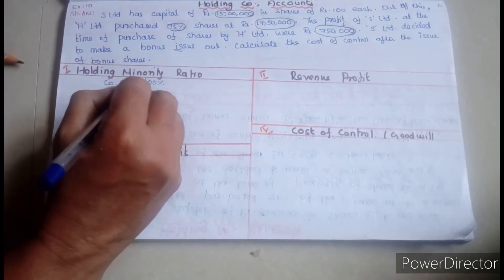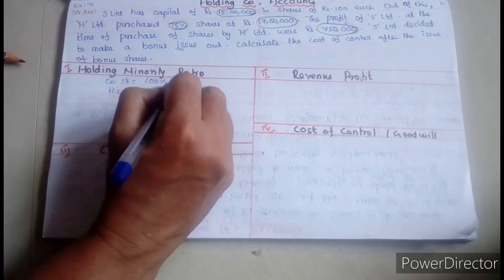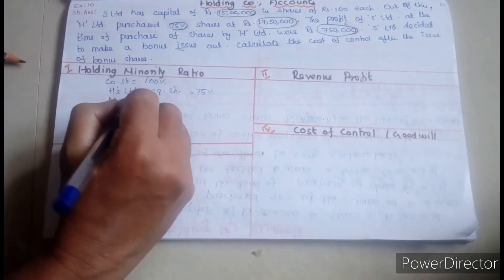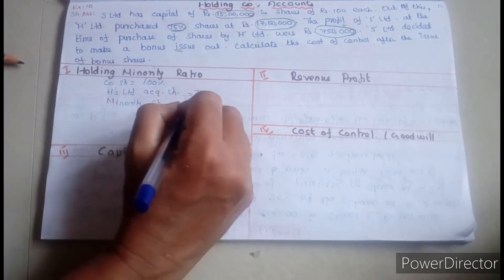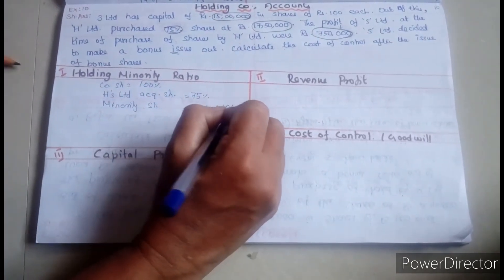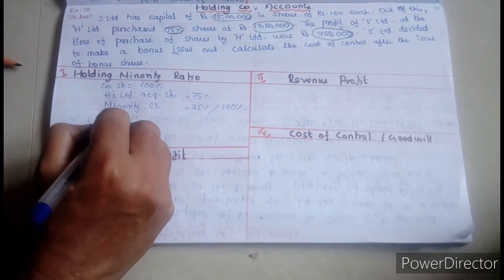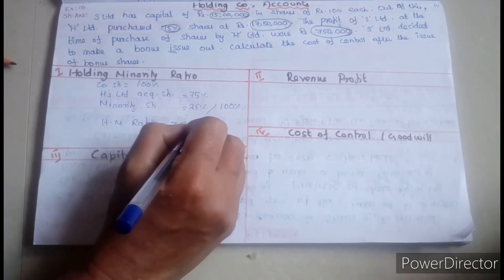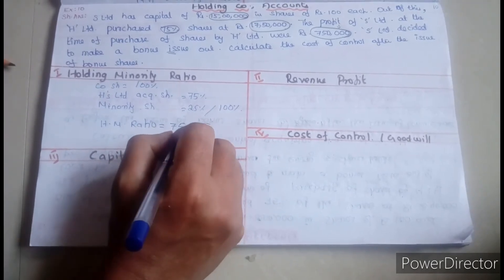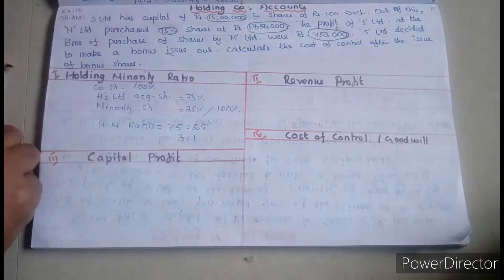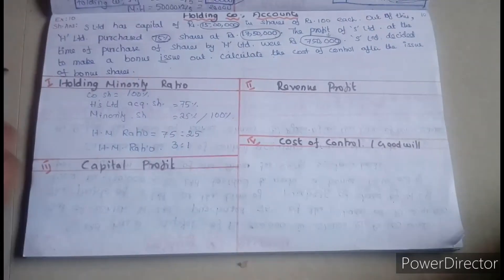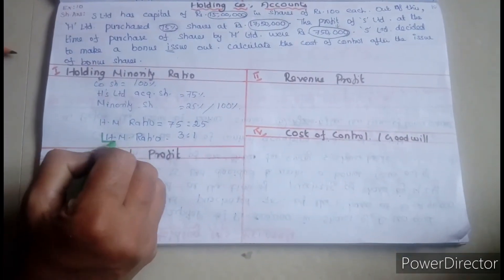First step is the cost of holding and minority ratio. The holding company's share is 75%, so H Limited acquires 75%. The remaining minority holders hold 25%. Total is 100%. So the holding to minority ratio is 75 is to 25, which simplifies to 3 is to 1.